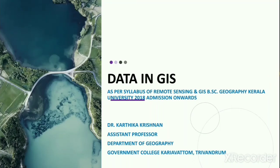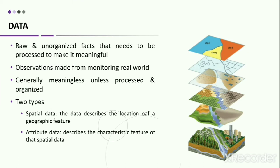Hello everyone, welcome back to GIS. In the previous session we were discussing the major components of a GIS system. Among them, data is one of the major components. So in today's session we will look into what is data in GIS, what are the major types of data, and what are the major characteristic features of such data. In general, data is a raw and unorganized fact that needs to be processed to make it meaningful. Data from observations we make from monitoring the real world will be really meaningless unless it is processed and organized. There are two types of data used in GIS: the spatial data and the attribute data.